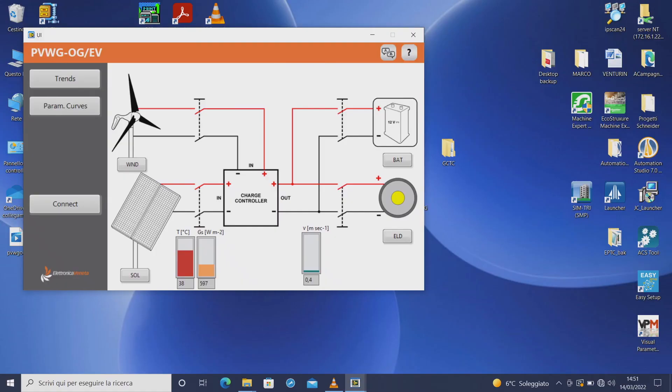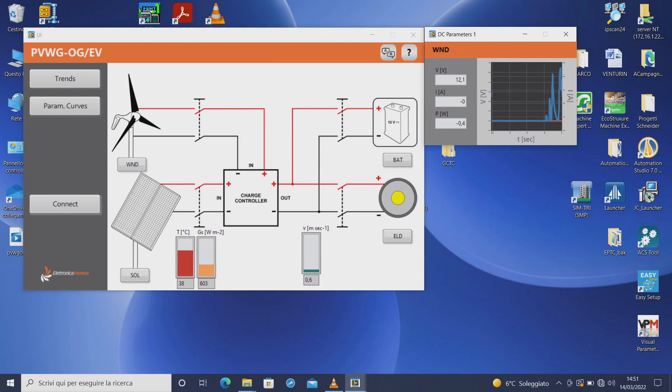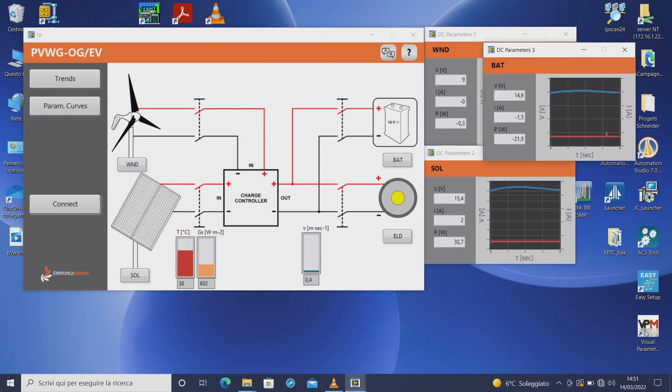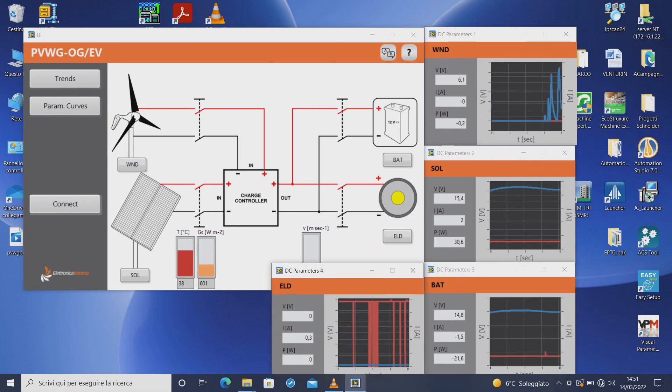In the supervision software we can toggle with this button the electrical parameters. So for example, this is the wind generation, the photovoltaic generation, the battery and the electrical load.